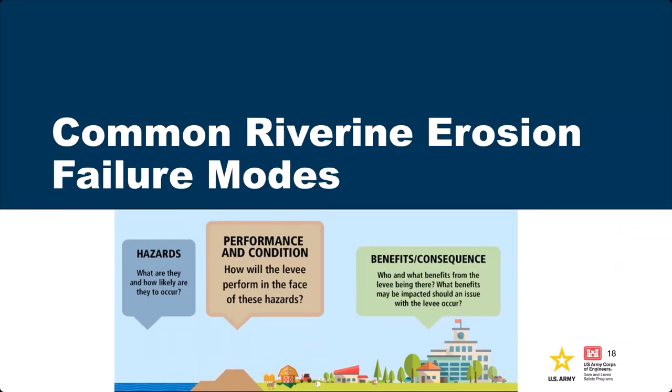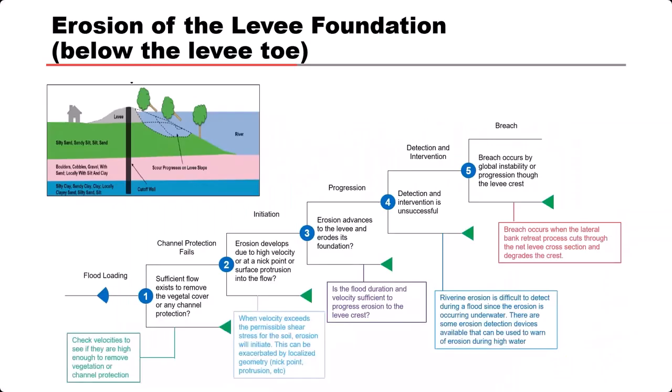Common riverine failure modes: the first is erosion of the levee foundation below the levee toe. The land-side levee toe is the distinction between foundation and embankment erosion — this failure mode initiates below the toe, and often starts even lower. If scour is also present, you need a scour calculation in there because that could potentially over-steepen the bank as well, before looking at the lateral bank retreat portion.